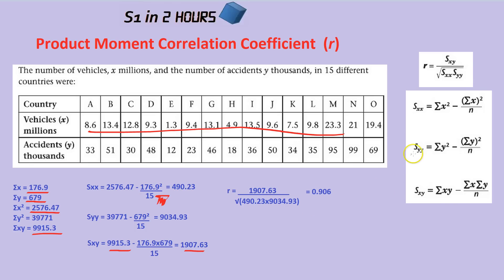Using a similar method we'd work out SYY: the sum of all the Ys squared, so each Y value squared and added together, take away the sum of Y — so all of them added together, squared, divided by N. We'd get that total. Then we simply take each of these answers and put them into the overall formula given at the front. Be very careful with the calculator — make sure you're getting the square root over the entire bottom line, so you might want to use brackets.